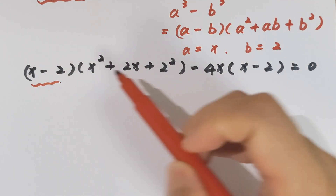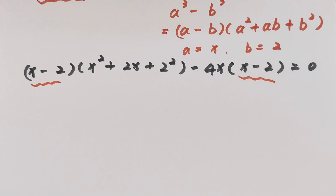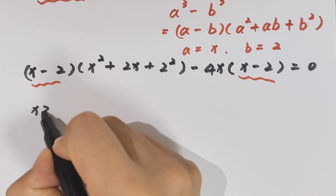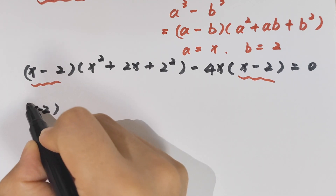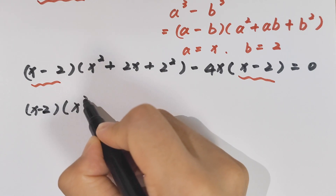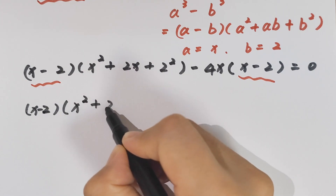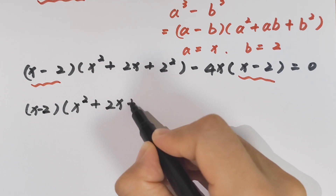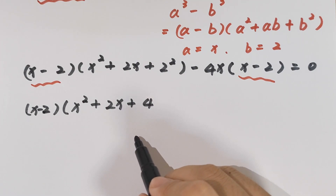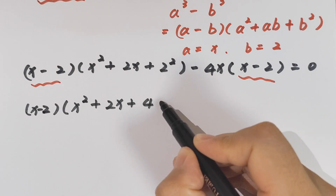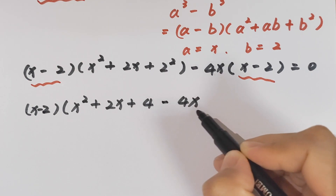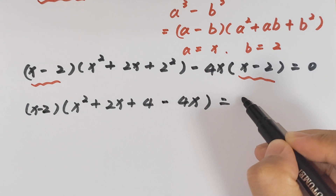Now (x minus 2) is common, so we can take this out of the bracket, giving (x minus 2) times (x squared plus 2x plus 4 minus 4x) equals 0.